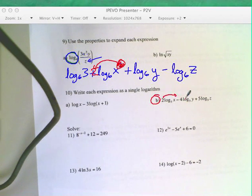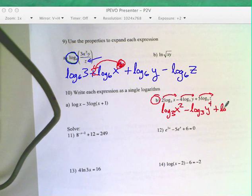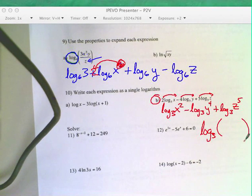And you'll have log base 3 of x squared minus log base 3 of y to the 4th plus log base 3 of z to the 5th. So I sent all the exponents back up, and then I just have to check anything that's positive goes up top, anything that's negative goes in the bottom, and it condenses to a single logarithm.